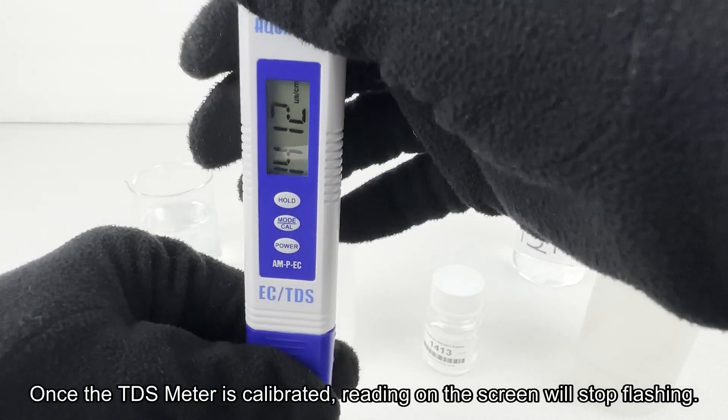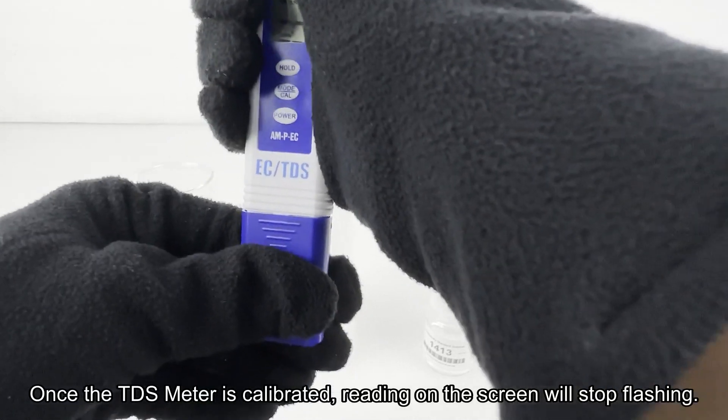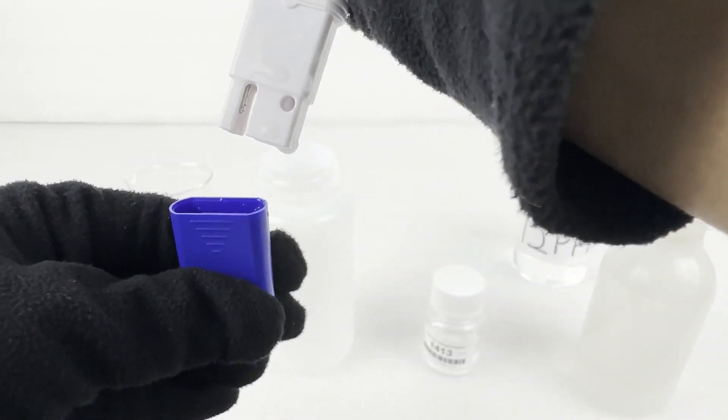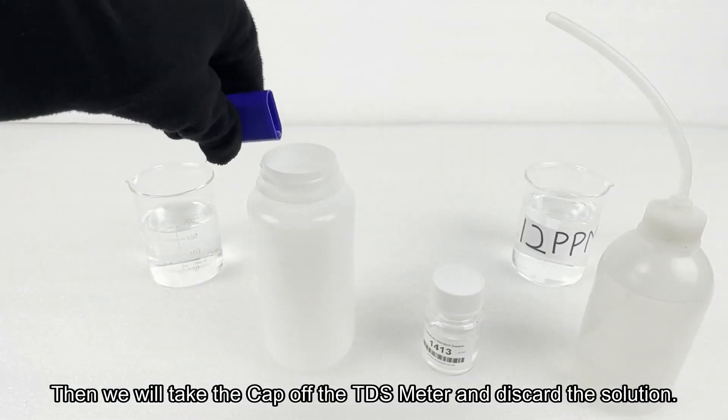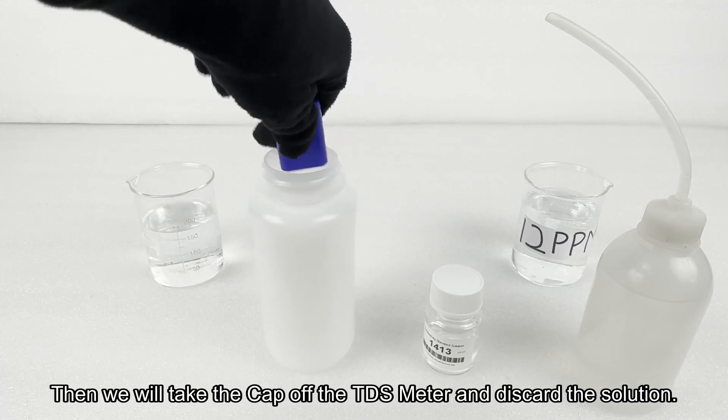Once the TDS meter is calibrated, the reading on the screen will stop flashing. Then we will take the cap off the TDS meter and discard the solution.